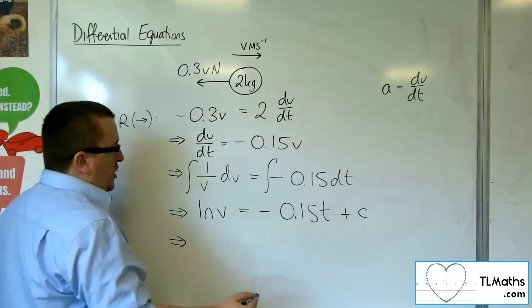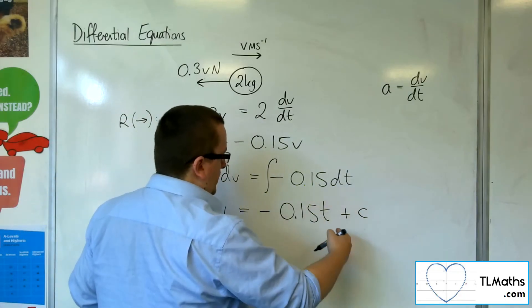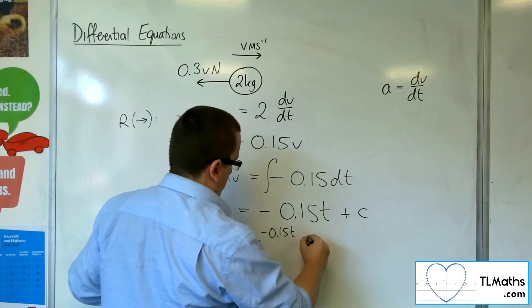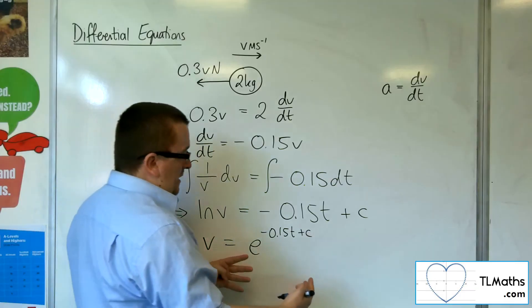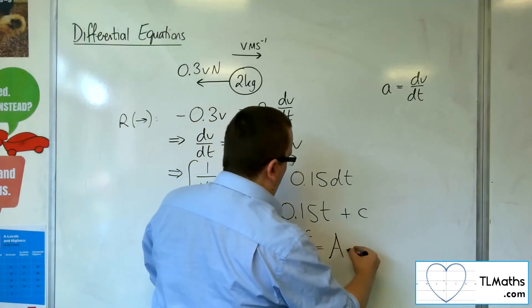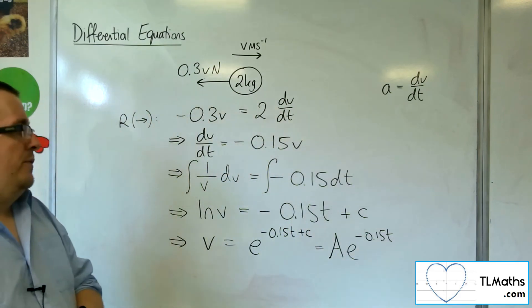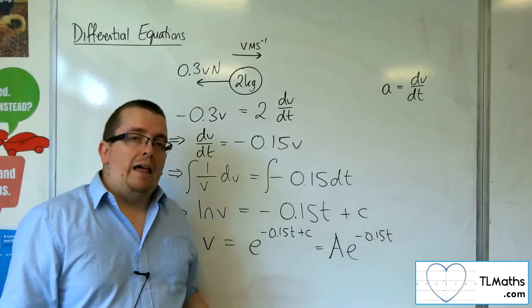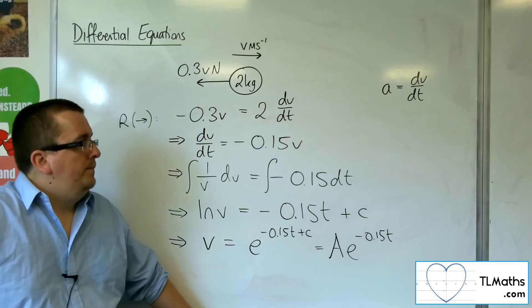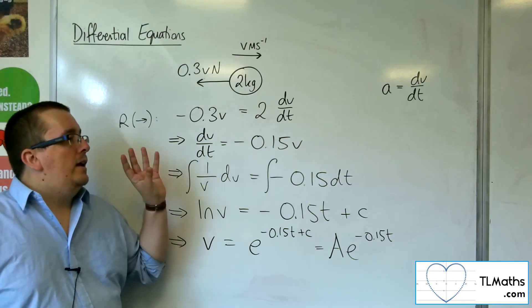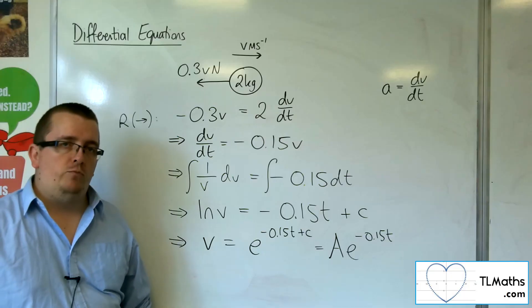And then I can rearrange to get v equals. So the velocity is equal to e to the power of that. So that's e to the minus 0.15t times e to the c, which you can rewrite as a times e to the minus 0.15t. So that would be your general equation, and then you could substitute in any initial conditions to find a. OK, so this is how a forces mechanics problem can turn into a differential equation problem.